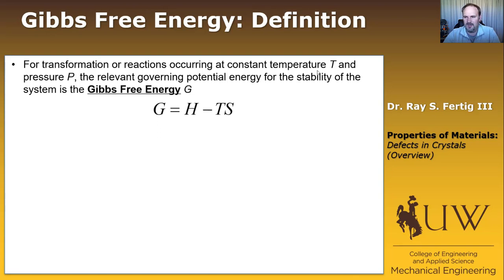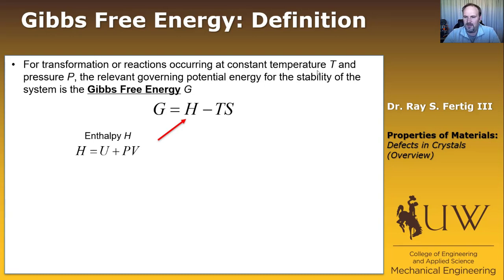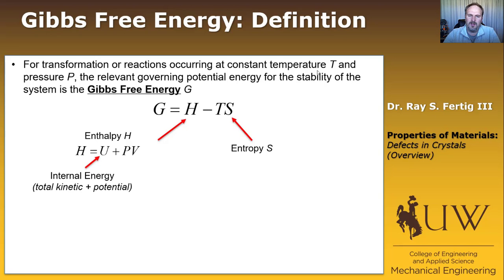We define G as H minus TS. H is the enthalpy, which we defined as U plus the PV work term. S is entropy, and T is temperature. U is the internal energy of the system, which is the sum of total kinetic energy plus potential energy — that's where your atomic bond energy terms come into play.